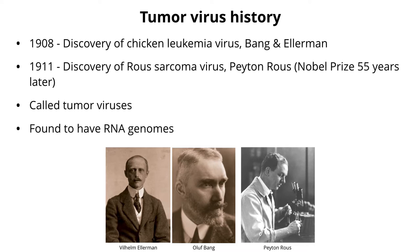Rous's discovery came about when a farmer brought him a chicken with a big tumor on its side. He eventually isolated the virus from that tumor and called it a tumor virus, which was given his name: Rous sarcoma virus. Later on, others found that these tumor viruses had RNA genomes. We also found out that there are DNA viruses that can cause tumors, but today we're going to focus on these RNA tumor viruses.